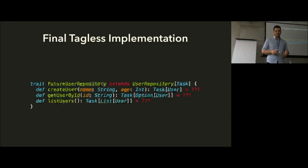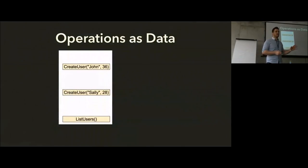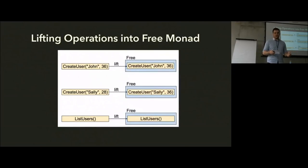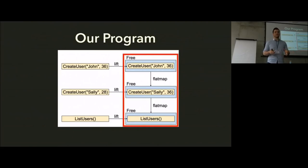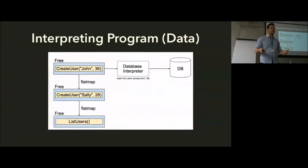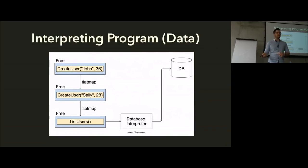Free Monad looks very similar to final tagless. The only difference is that it reifies the domain — it basically turns each one of these methods into data, and then you can interpret that data. If we create our operations as data — represented here as yellow boxes for case classes — we can then lift our operations into the free monad and sequence operations by flat-mapping. That becomes our actual program, which is just a description. It's not actually doing anything yet. Interpreters come along, read the free monad, and do some kind of interpretation — for example, inserting into a users table and writing to a database.